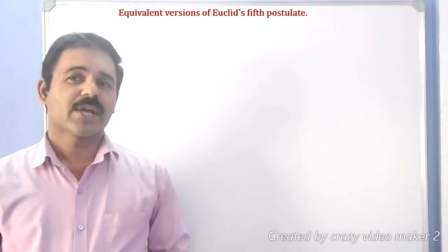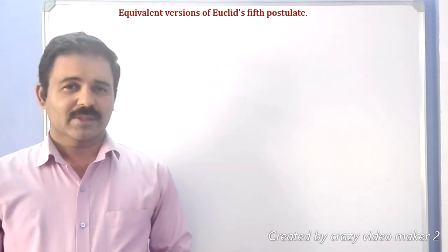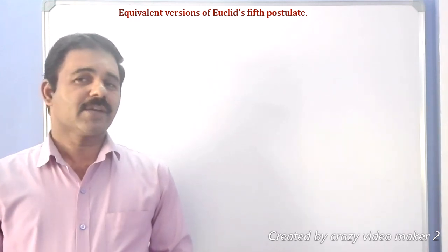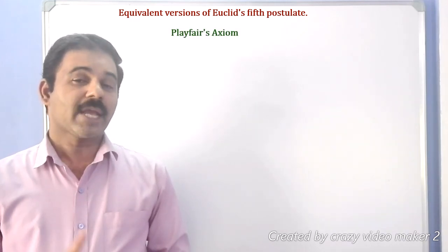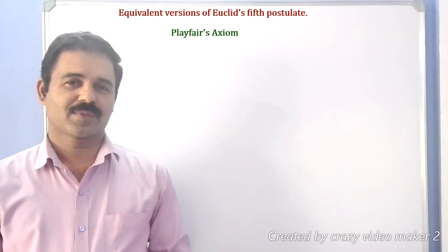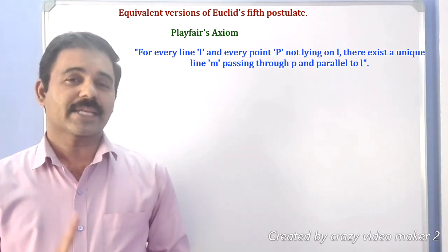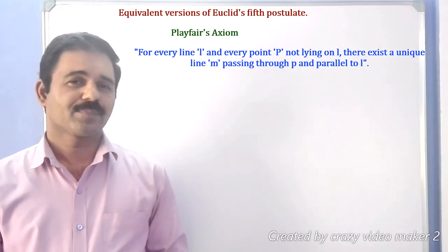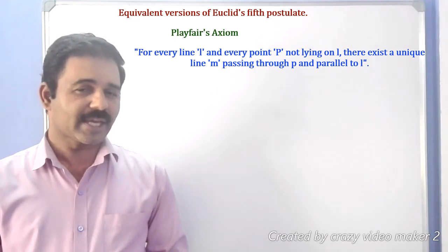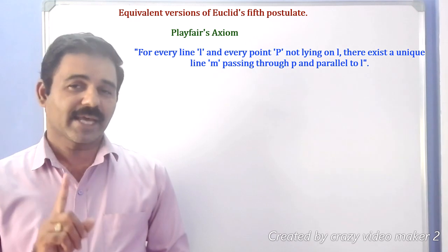We will now study about equivalent versions of Euclid's 5th postulate. One of the very important equivalent versions is called Playfair's Axiom. Playfair's Axiom states that for every line L and every point P not lying on line L, there exists a unique line M passing through P and parallel to the line L.